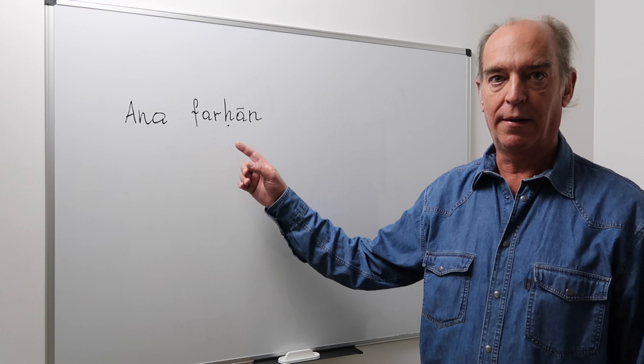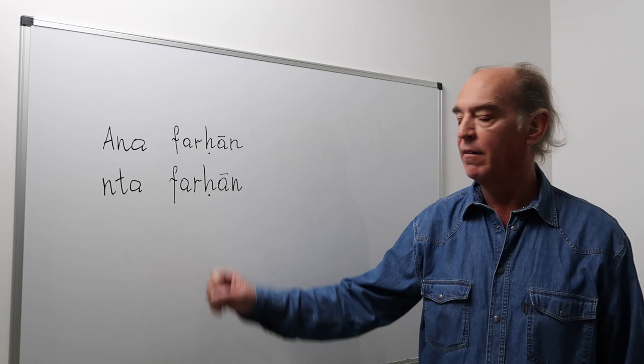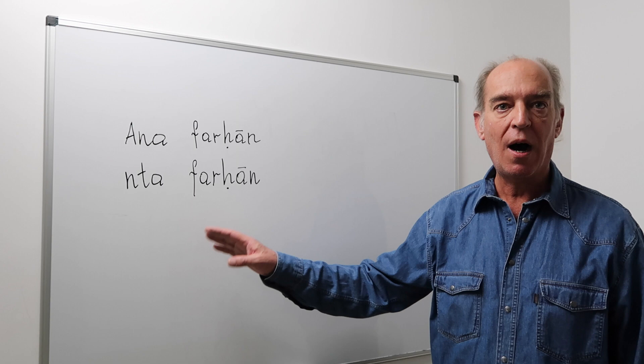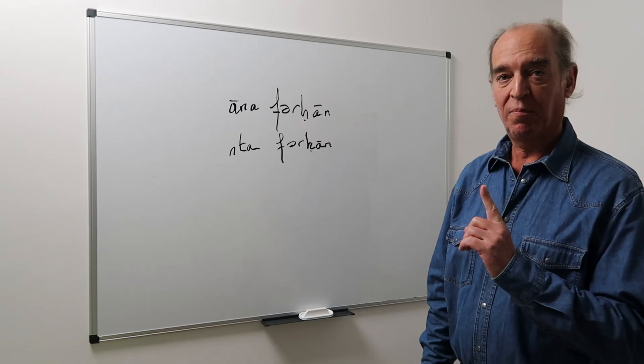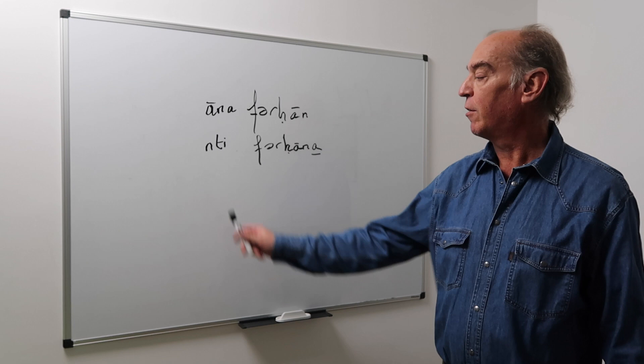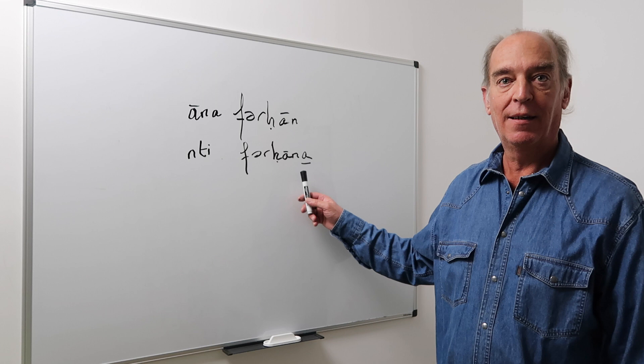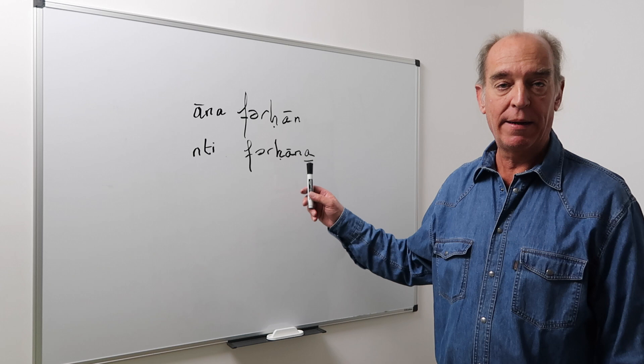For example, Anna ferhaan — I, happy — you translate that as 'I am happy.' It's very simple. You do the same with the other pronouns. For instance, Nta ferhaan — 'you happy' — which means 'you are happy.' A man says Anna ferhaan; a woman says Anna ferhaana. Nta ferhaan, Nti ferhaana.